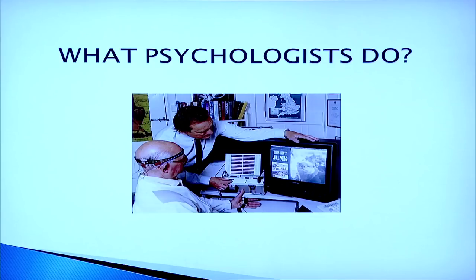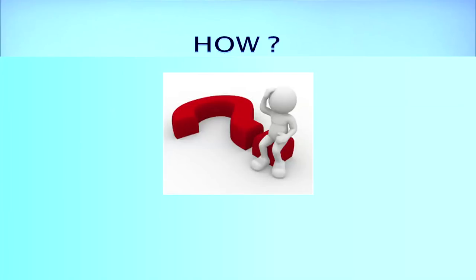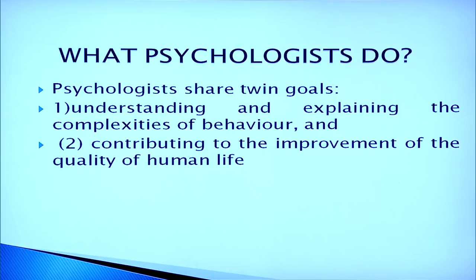Psychologists try to understand human behavior by using various tools and techniques. How do psychologists do all this — if they are not magicians, how do they look inside the mind? How can they predict behavior? Psychologists share twin goals: the first is understanding and explaining the complexities of behavior, and the second is contributing to the improvement of the quality of human life. They are involved in two kinds of activities: understanding and explaining why a particular person is behaving in a certain manner, and based on that understanding, how a psychologist can help in the improvement of a person's life.